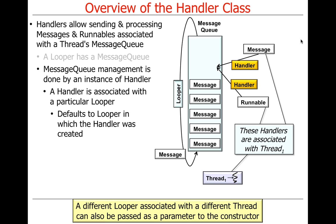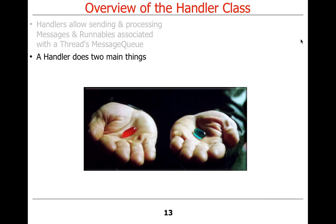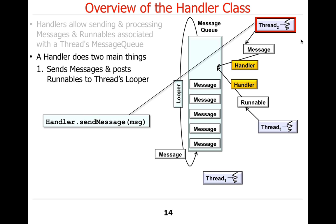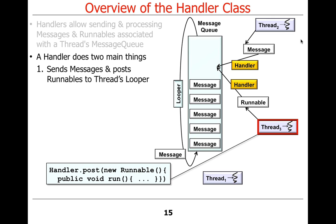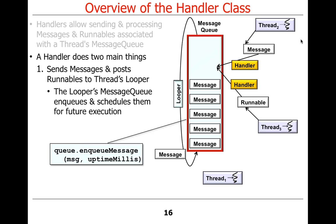It's also possible to give a looper to the handler's constructor, and there are situations where that gets used. There are two main things a handler does: first, it sends messages and posts runnables to the thread's looper. You can either use send message, which passes a message to the appropriate handler's looper, or you can post runnables.